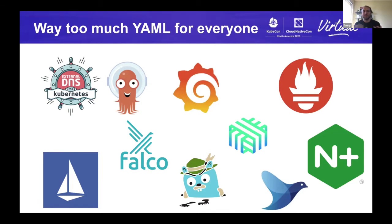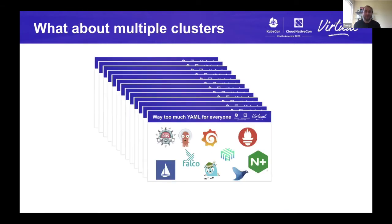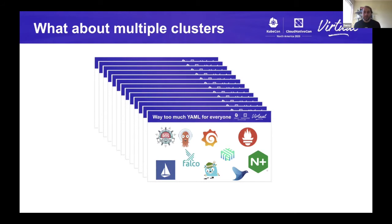Once you get to a certain scale, most companies generally lean towards breaking up their clusters into multiple clusters. This problem is compounded because you need to configure each of these different add-ons for each cluster. The point I'm trying to highlight is that editing Kubernetes YAML on the micro scale of one file has its challenges, but managing all of your Kubernetes YAML across an entire cluster and multiple clusters is also challenging — making it hard for organizations to adopt Kubernetes.